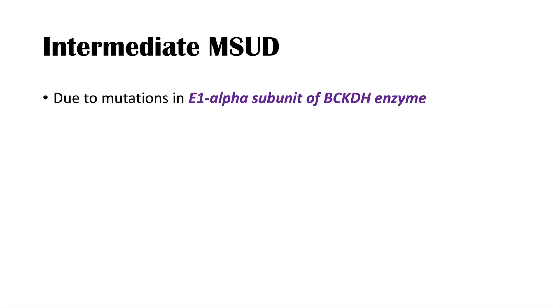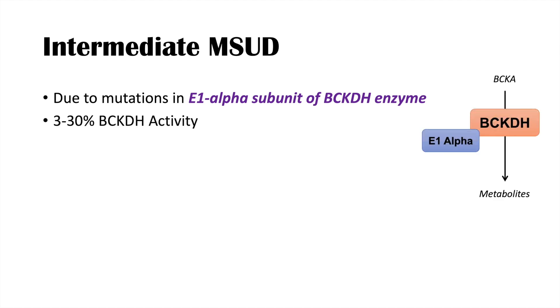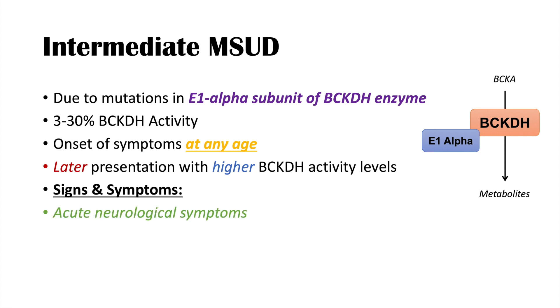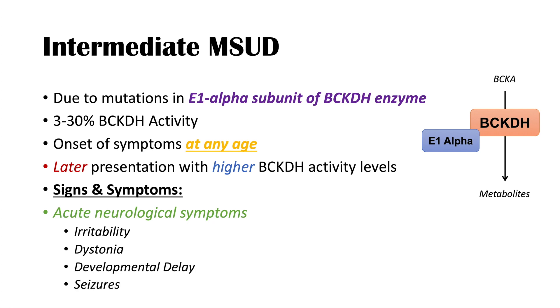In the intermediate maple syrup urine disease subtype, caused by mutations in the E1 alpha subunit of the BCKDH enzyme, the activity level is generally 3 to 30%. Onset of symptoms can occur at any age — individuals with higher BCKDH activity levels tend to present later in life. Signs and symptoms include acute neurological symptoms such as irritability, dystonia, developmental delay, and seizures. It is the least severe form.